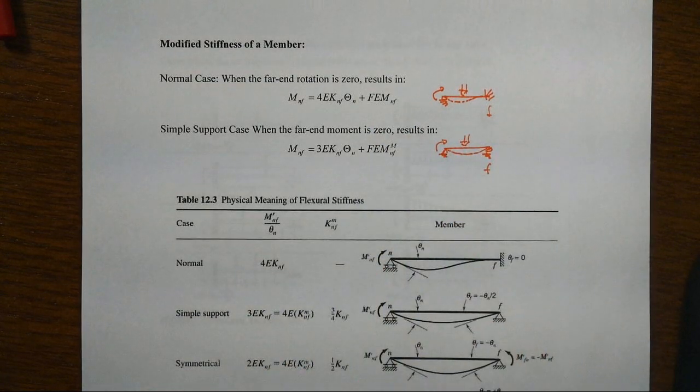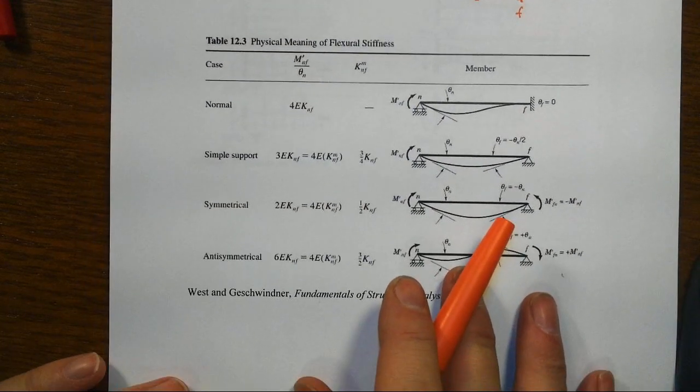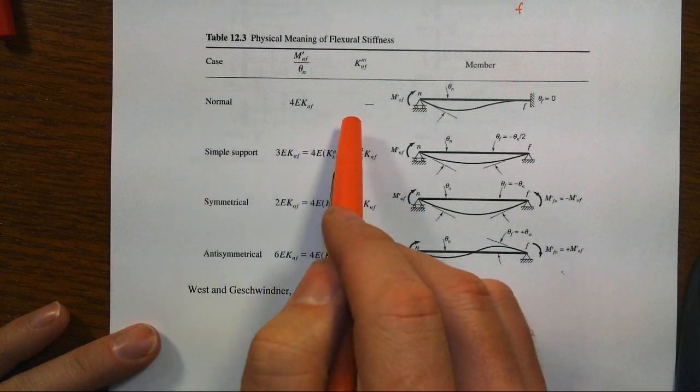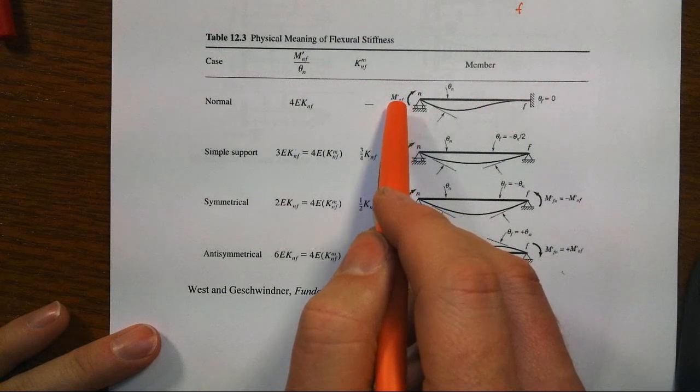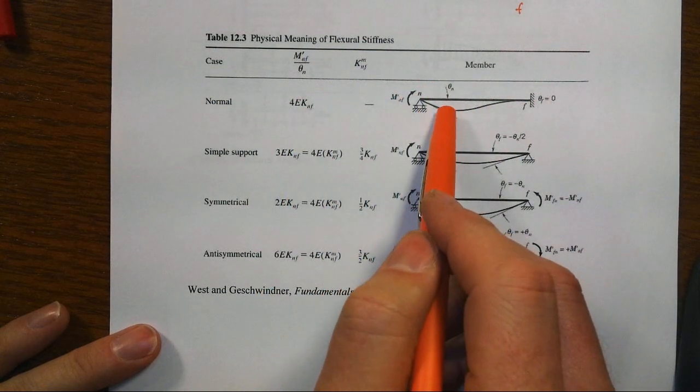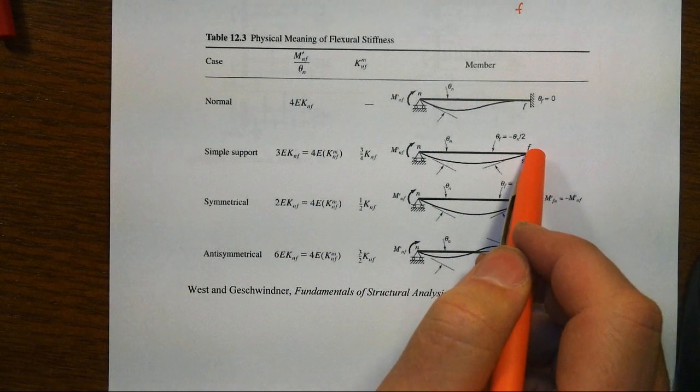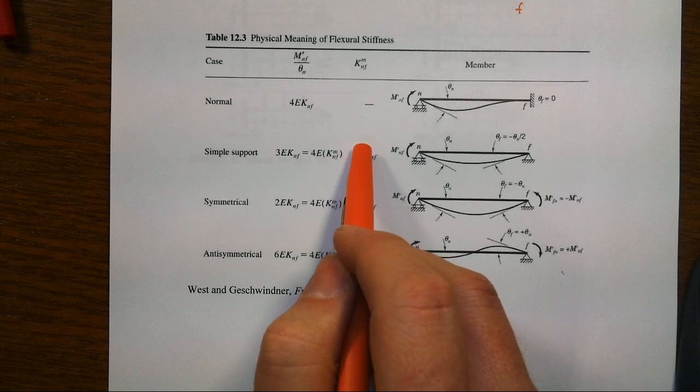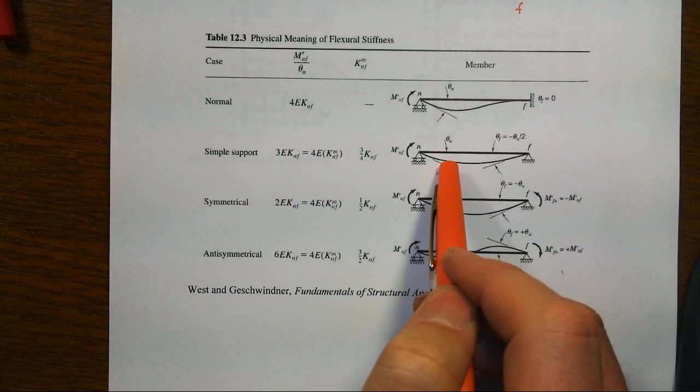Let's step through this once again. If we look at the flexural stiffness we've got in the normal case here, this theta that's here, the far end is fixed, it takes us then 4EK to get a unit rotation. If the far end is free and there's no moment out there, it'll take us only three quarters as much moment to apply to get that unit rotation.